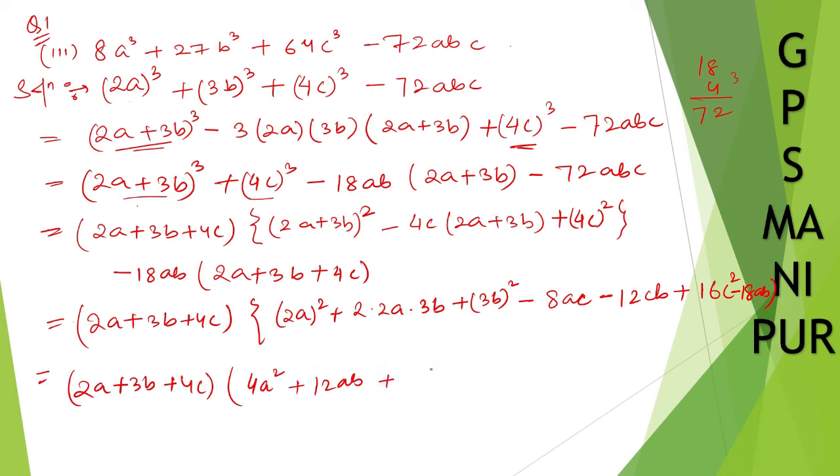Plus 2 times 4c is 12, 12ab plus 3b square, so 3 times 9 b square minus 18ac. After that minus 12bc plus 16c square minus 18ab.